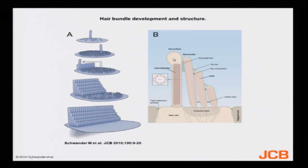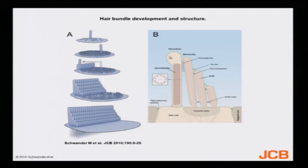This bigger one is called the kinocilium, and all these are the stereocilia. They are connected by the tip link — you can read 'tip link' there — and they are all eventually connected to the cell. If the kinocilium moves left, all the connectors move left; if it moves right, everything moves right. Depending on the direction of movement, it decides whether the current generated will be inhibitory or excitatory.